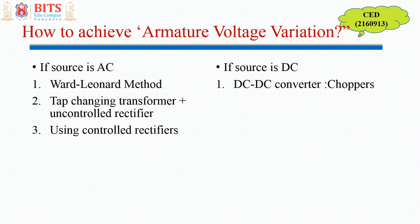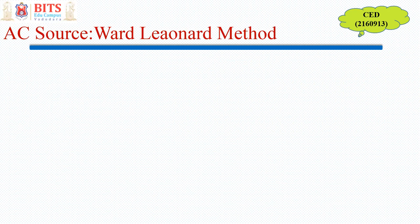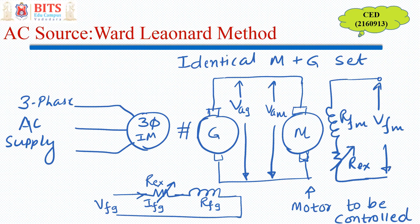In this particular section we are going to discuss the Ward-Leonard method, where the source is AC. It is a very old method — it was actually introduced when there was no power electronics or other such devices available. So this was one of the very old methods, and this is the diagram.